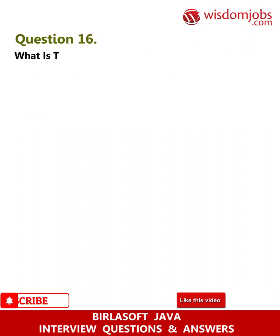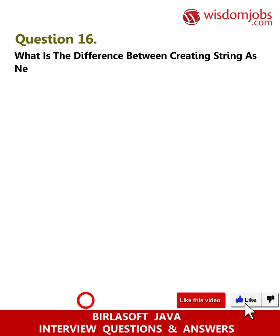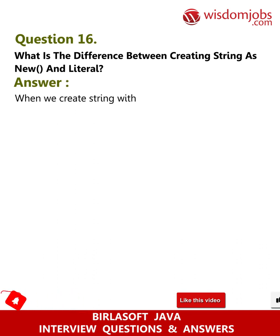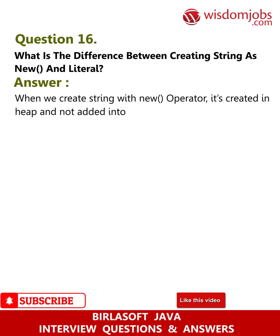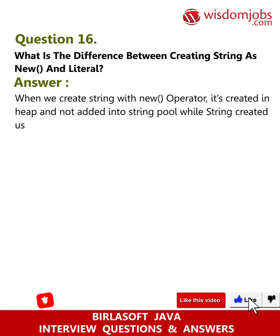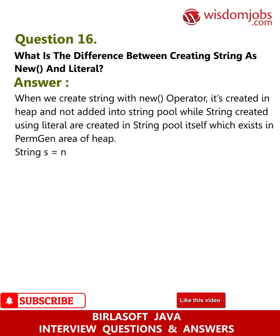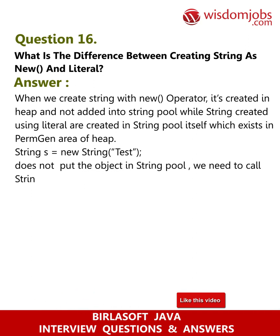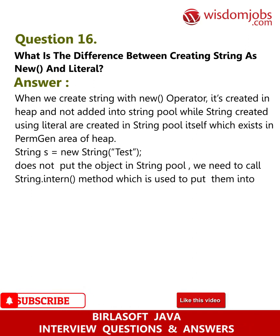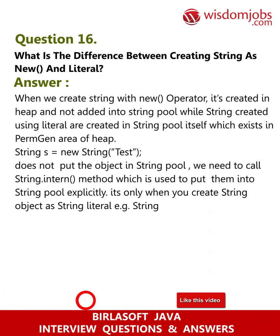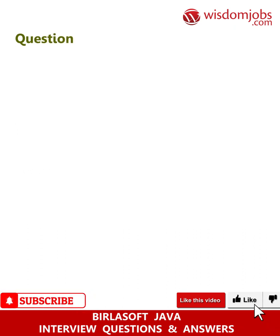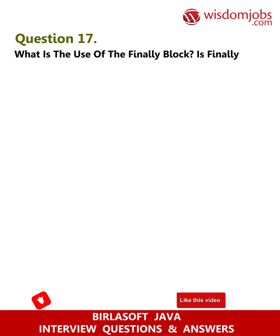Question 16: What is the difference between creating a String as new and as a literal? Answer: When we create a String with the new operator, it's created in the heap and not added into the string pool, while strings created using a literal are created in the string pool itself, which exists in the PermGen area of the heap. String s = new String("test") does not put the object in the string pool; we need to call String.intern() to put it into the string pool explicitly. It's only when you create a String object as a literal, for example String s = "test", that Java automatically puts it into the string pool.